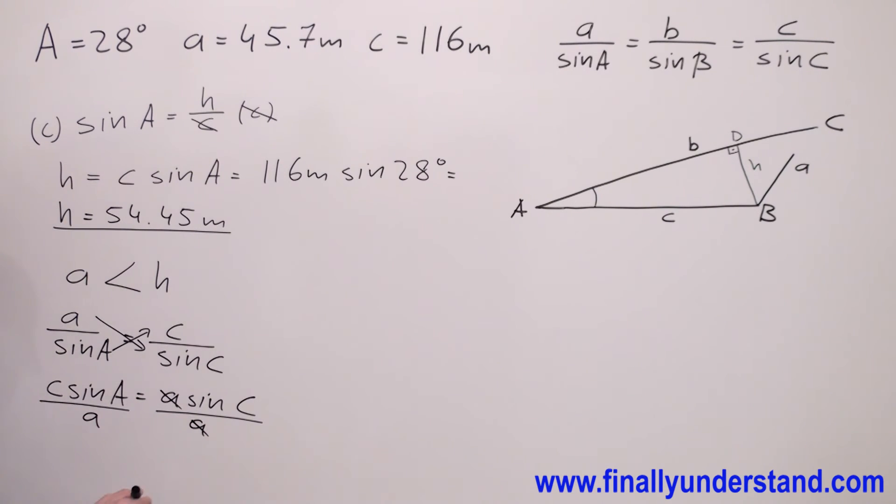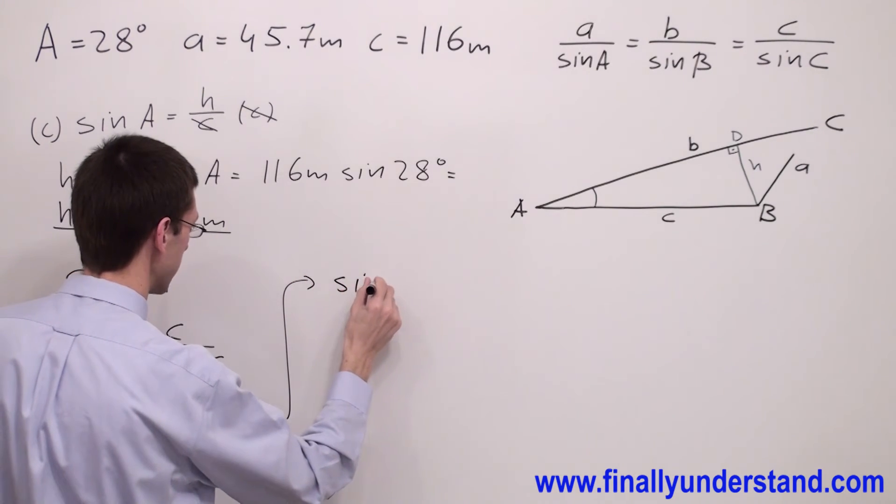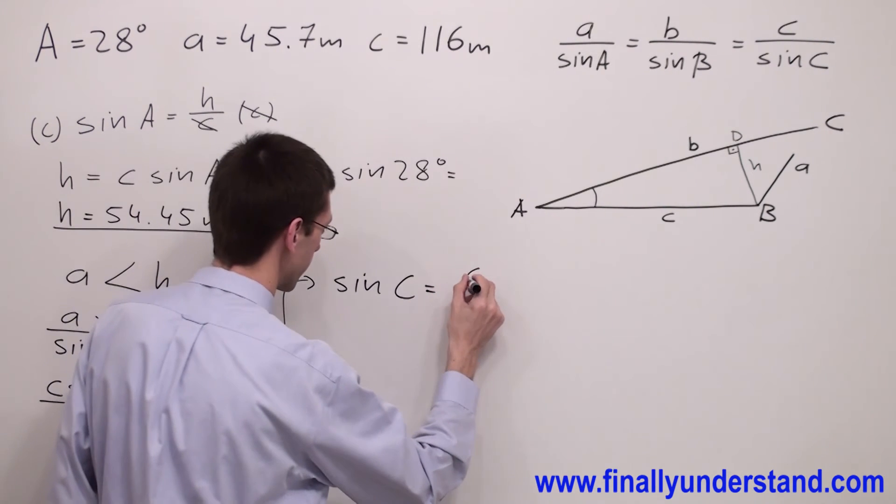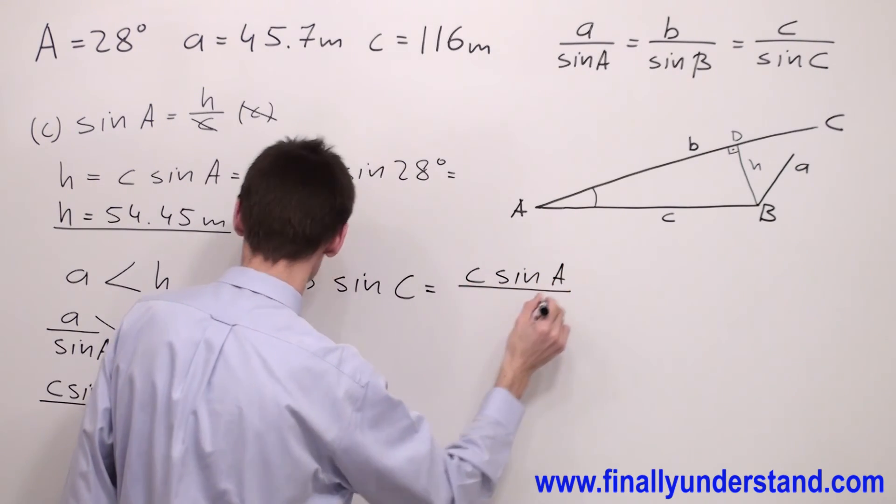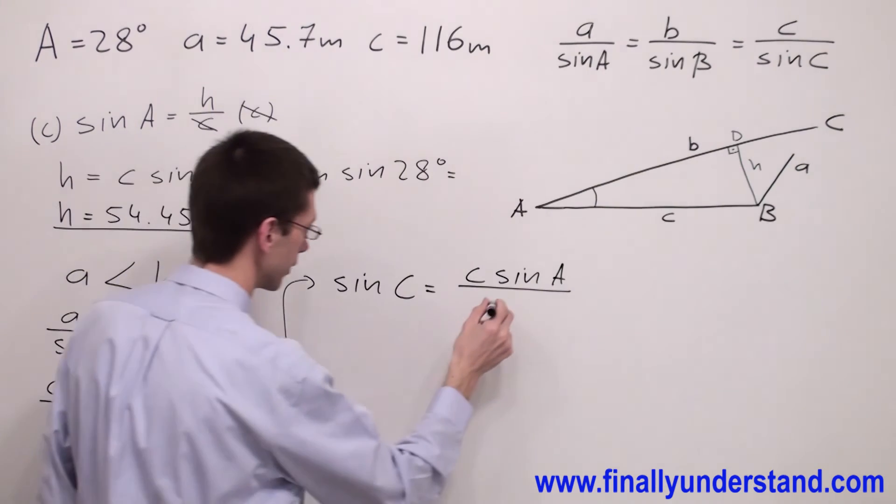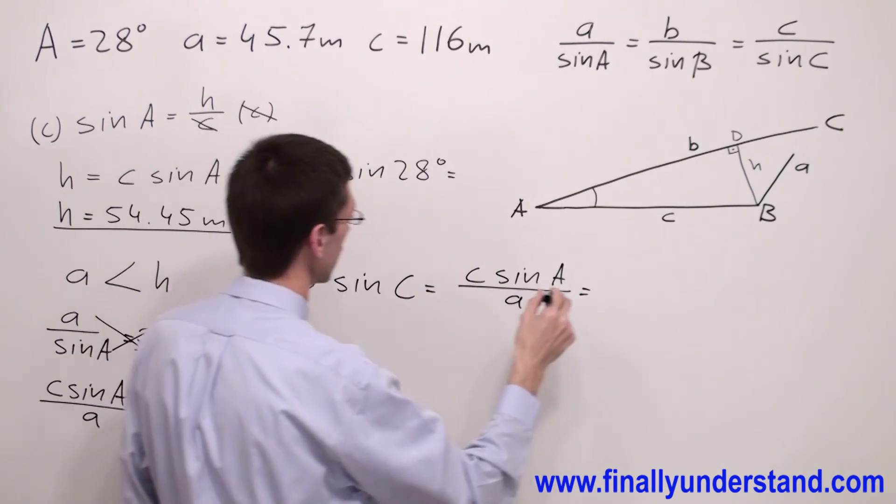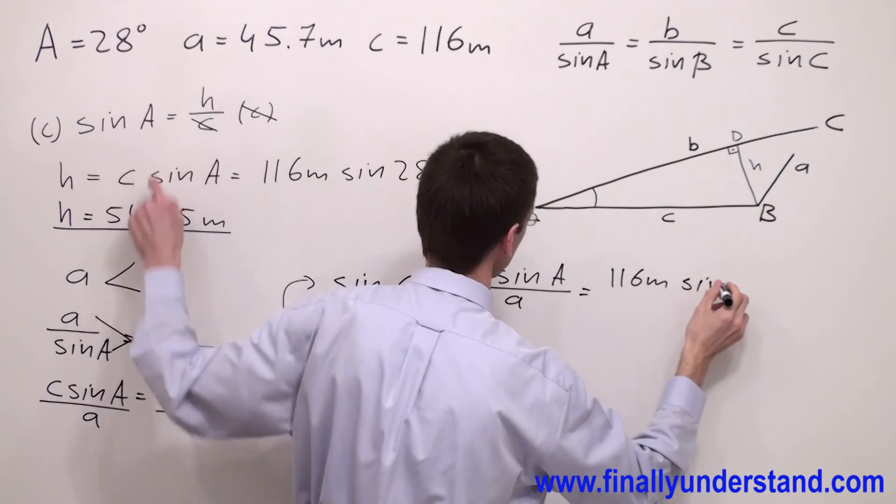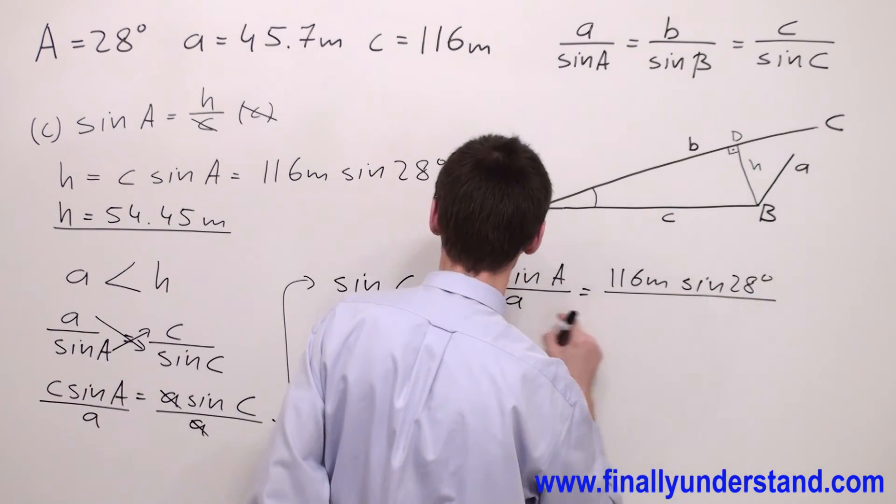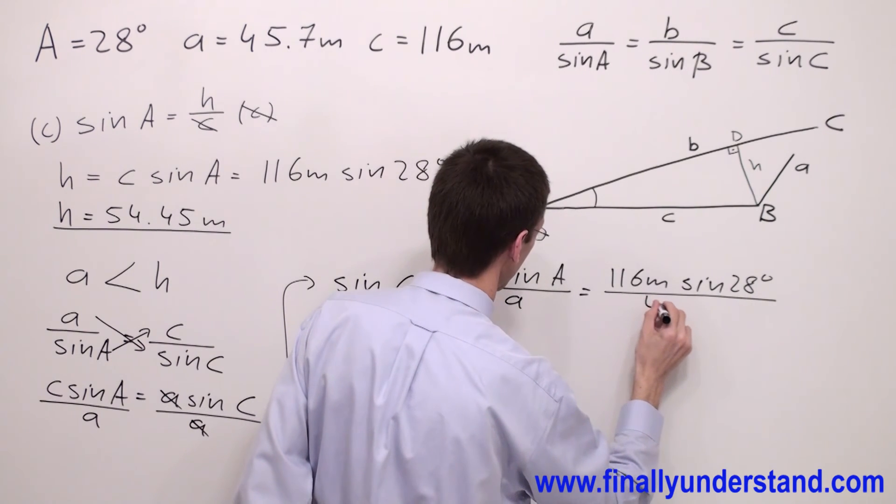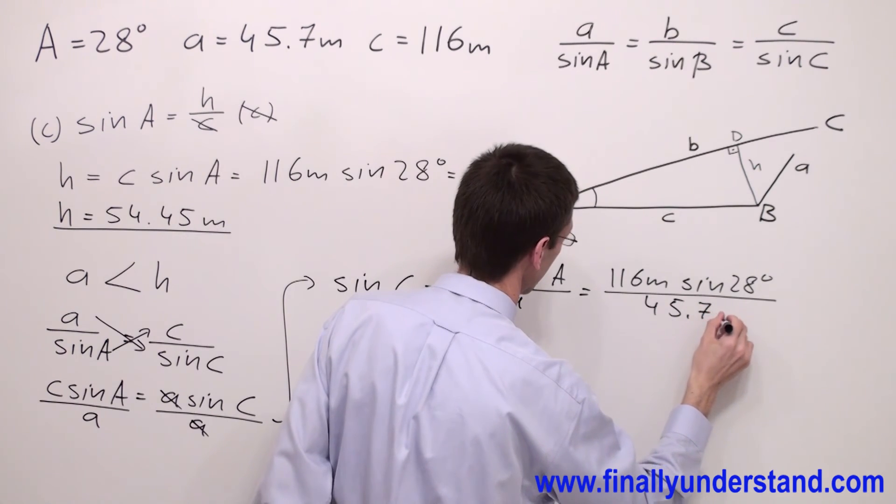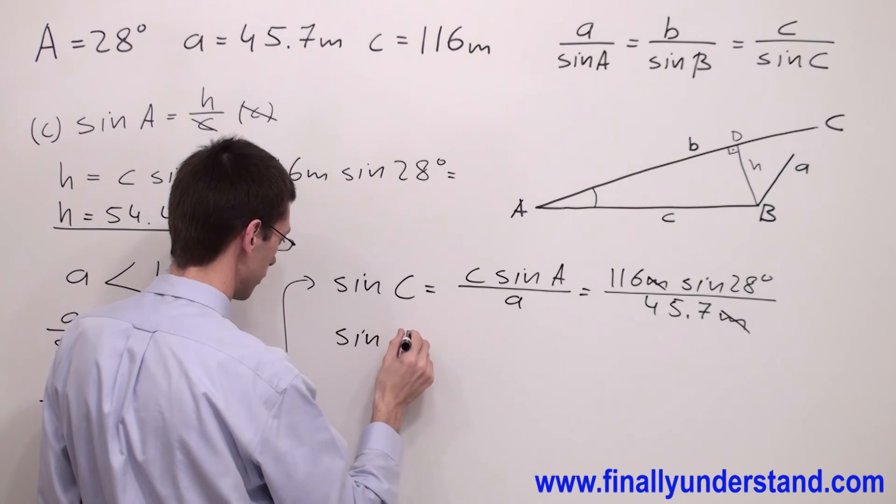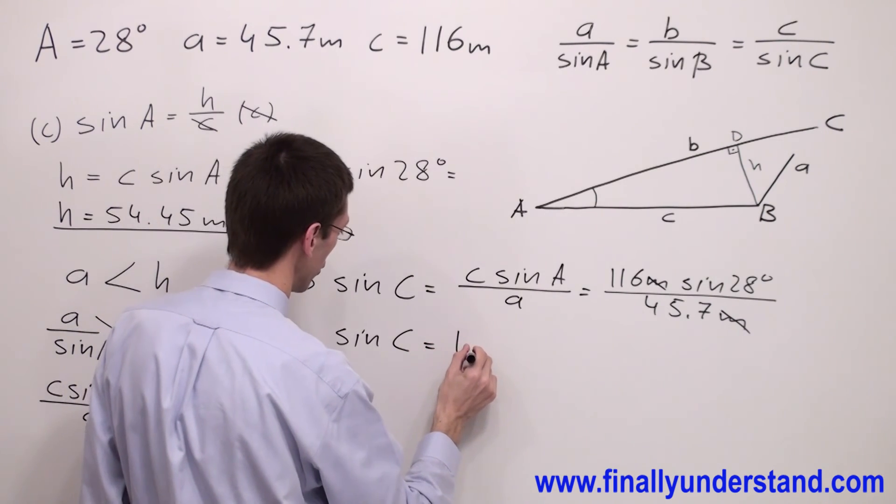A and A will cancel out, and I end up with side C times sine of angle A over side A. And I have side C equals 116 meters, sine of angle A which equals 28 degrees, over side A which equals 45.7 meters. Meter and meter will cancel out, and we have sine of angle C equals 1.19.